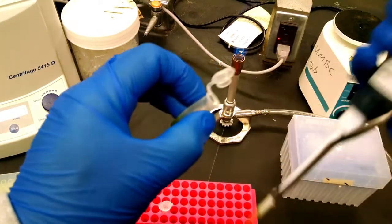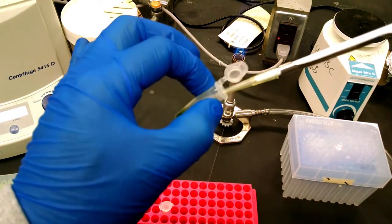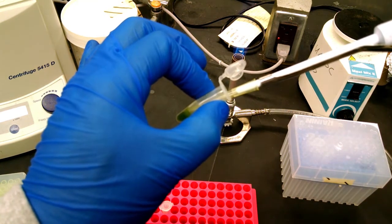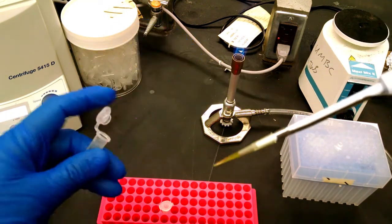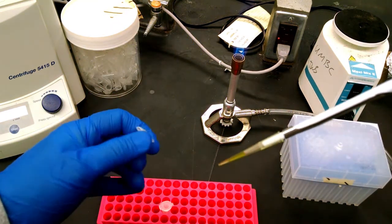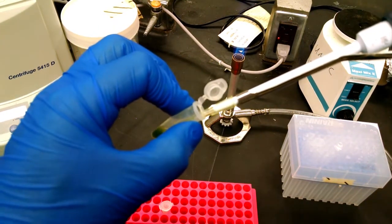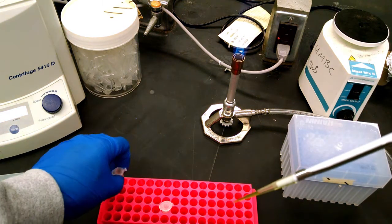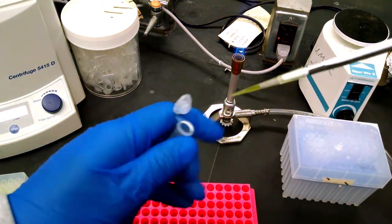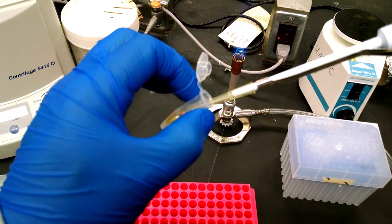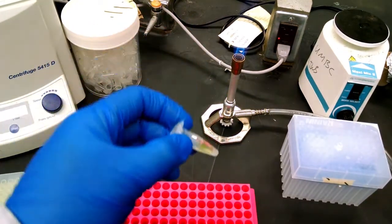So what we'll do is we will just take out 50 microliters. We will pipette it off. You don't want any pellet. And add it right to the Instagene.